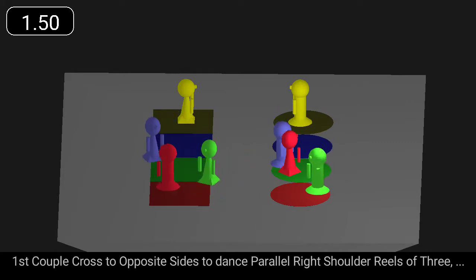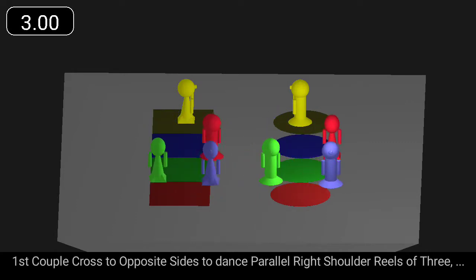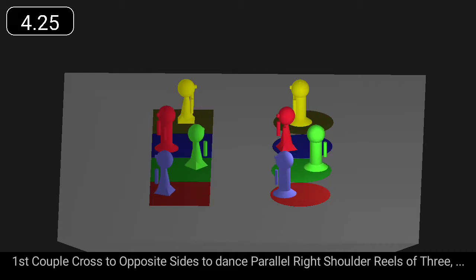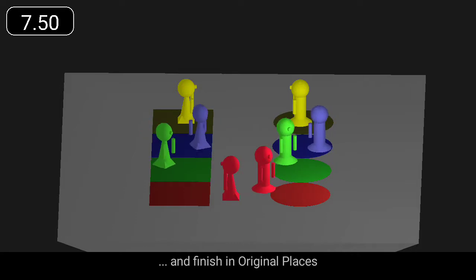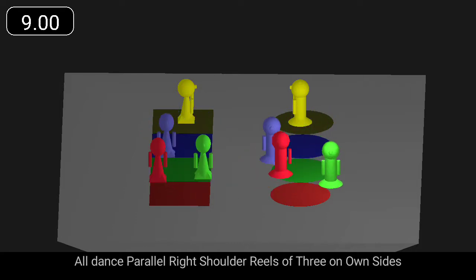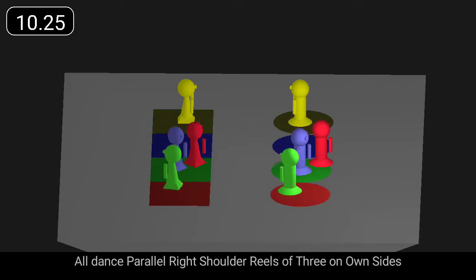First couple cross to opposite sides to dance parallel reels of three. First couple cross to own sides to dance parallel reels of three.